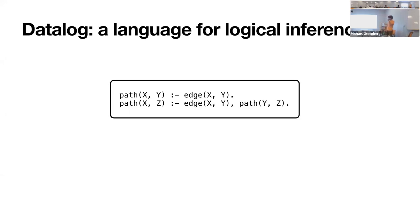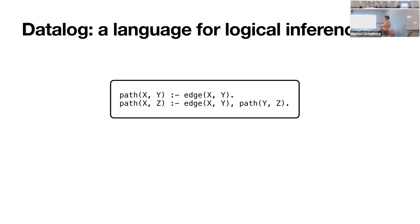We'll start with some background. The way I think about datalog is it's a simple language for stating logical inferences. Here we have everybody's favorite datalog program — any thing you read about datalog will always have essentially this program — and it's defining graph reachability. It consists of two rules, which are supposed to be read right to left as logical implications. The first rule says if there's an edge between X and Y, there is a path from X to Y. The second rule says if there's an edge from X to Y and a path from Y to Z, then there's a path from X to Z.